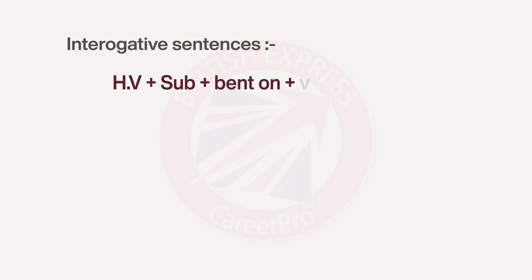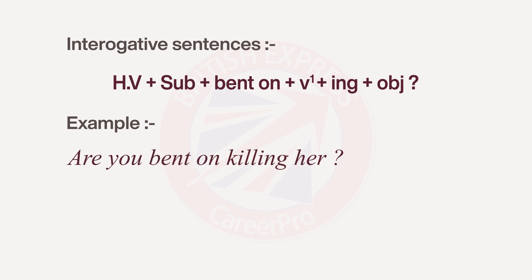As I have already told you, when a sentence starts with 'kya,' I use the helping verb first, then the subject, then 'bent on,' then the verb with -ing, then the object, and at the end we use a question mark.